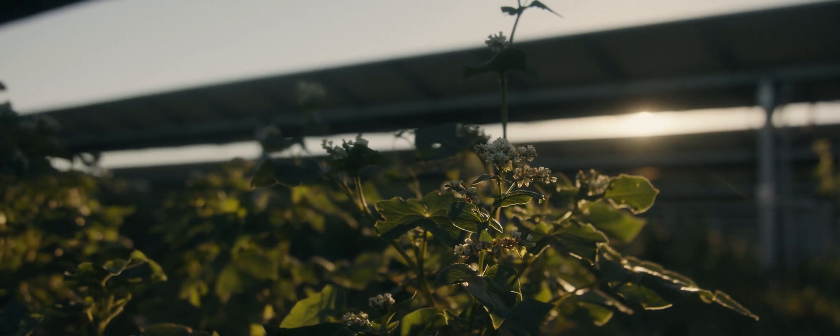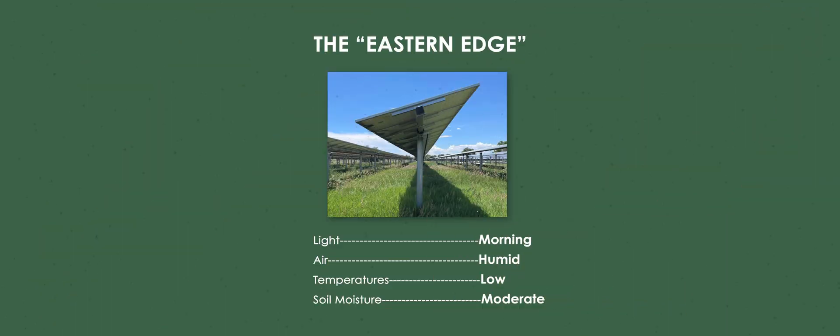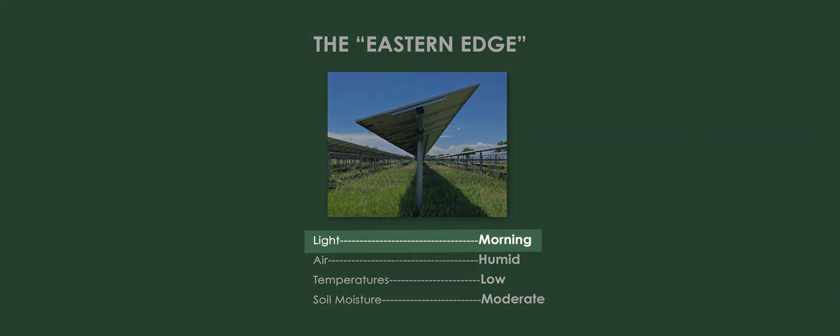So a microclimate is basically what a plant is experiencing throughout the course of a day. So if a plant gets light in the morning, that microclimate would be light in the morning, high relative humidity, and lower temperatures. It's just like a stats card where this year in 2021, the MVP was the eastern edge that received morning light. It had higher humidity and lower temperatures.